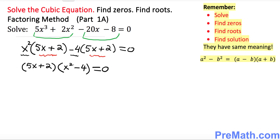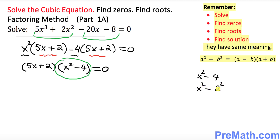Now I want you to look at one more thing in the second parentheses: x squared minus 4. We need to take care of that. x squared minus 4 can be written as x squared minus 2 squared. This is a difference of two squares, so using that formula it can be written as x minus 2 times x plus 2.